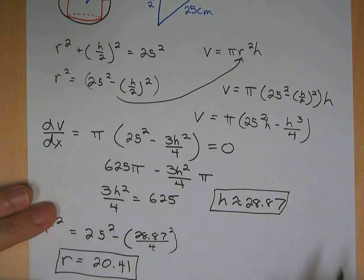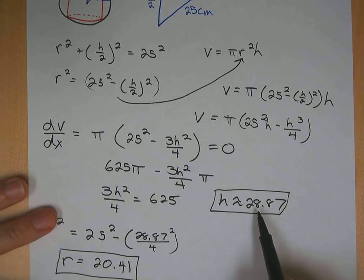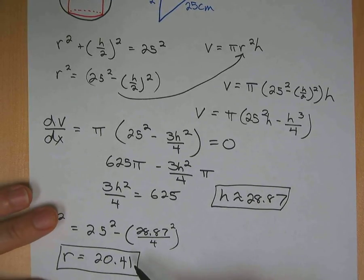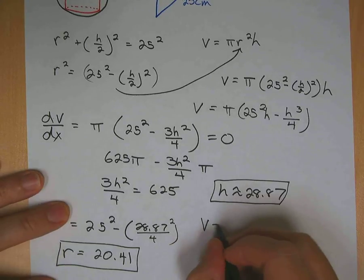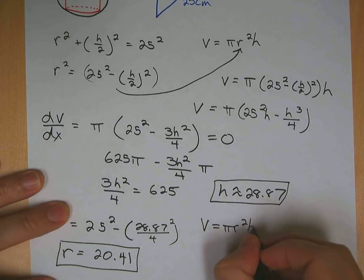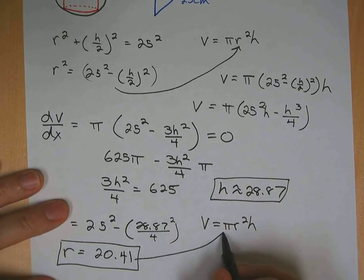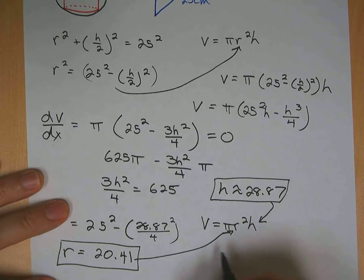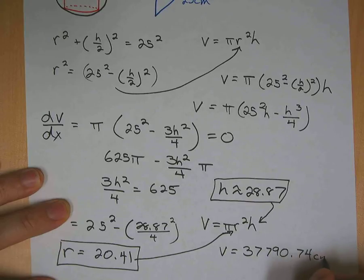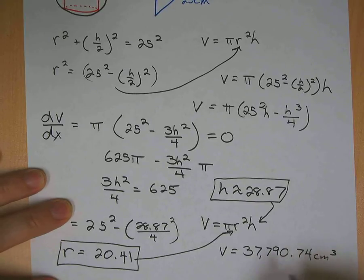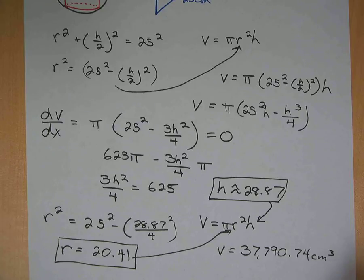So that's your maximum H value of the right circular cylinder, maximum R value radius of the right circular cylinder. And if you wanted to go ahead and find the maximum volume of the right circular cylinder using pi R squared H, you would plug in the R and the H. And if you do that, you'll get volume is equal to 37,790.74 cubic centimeters.